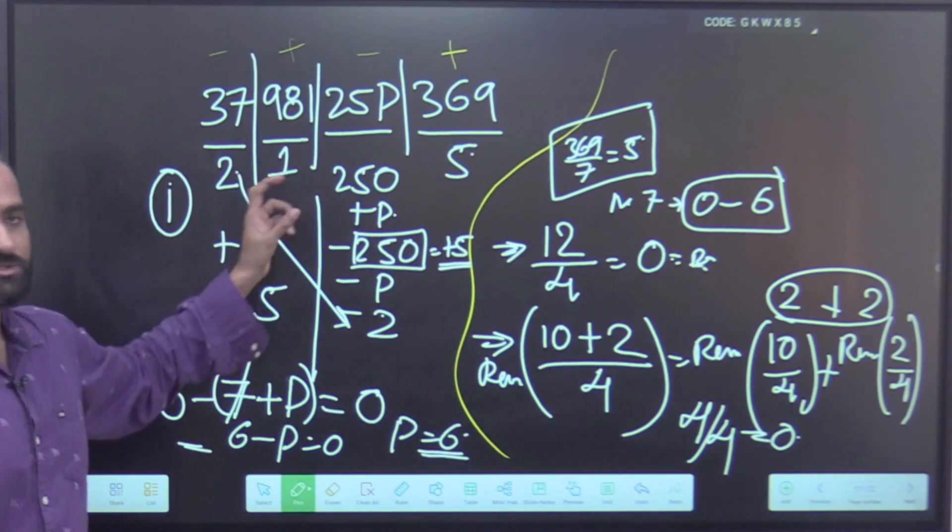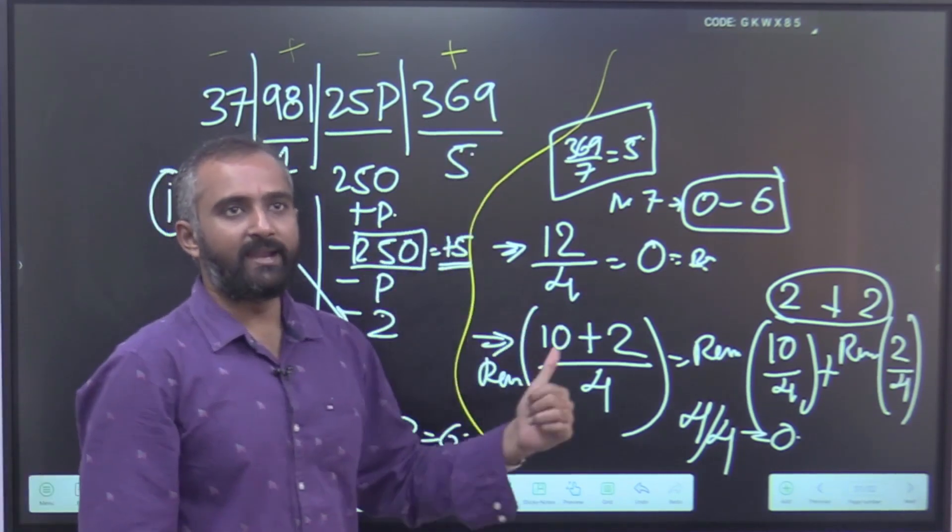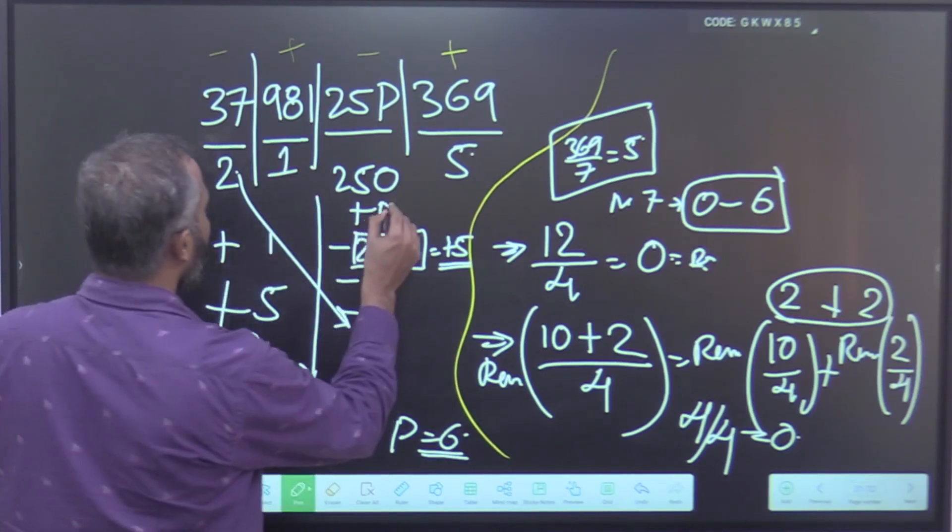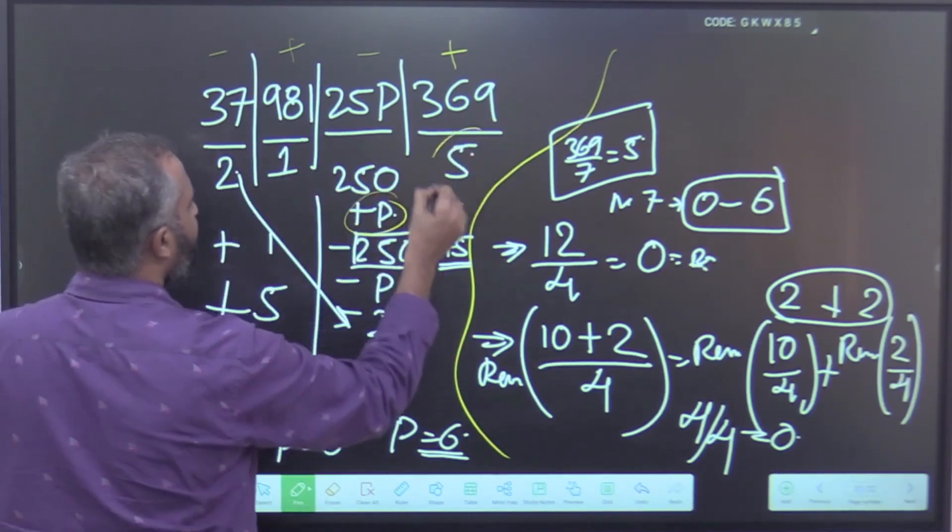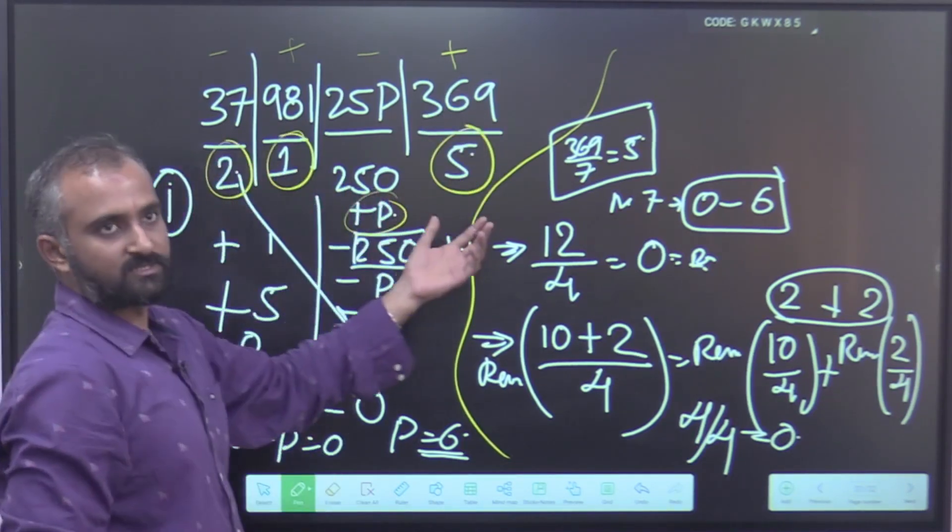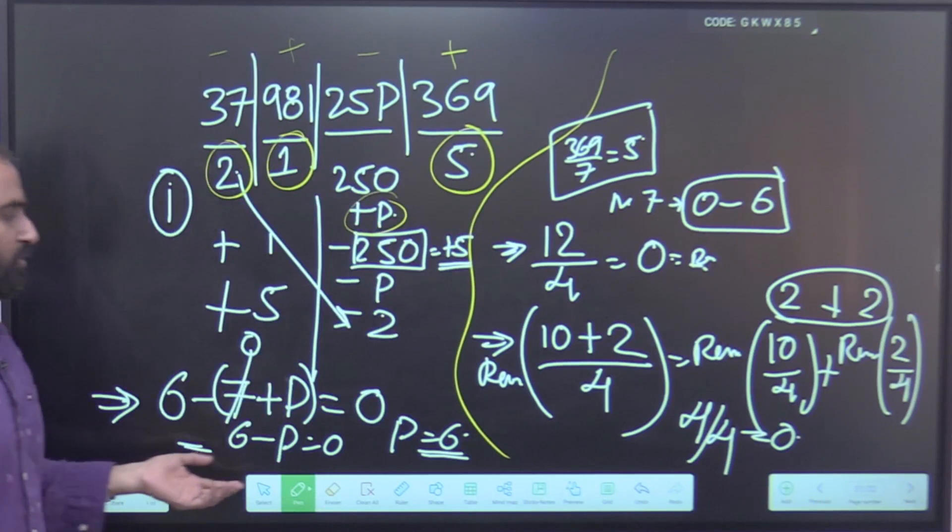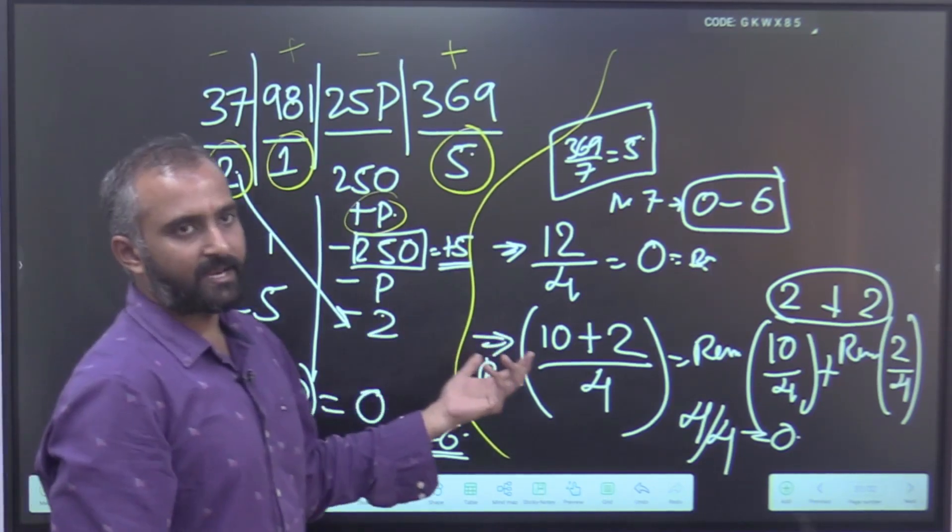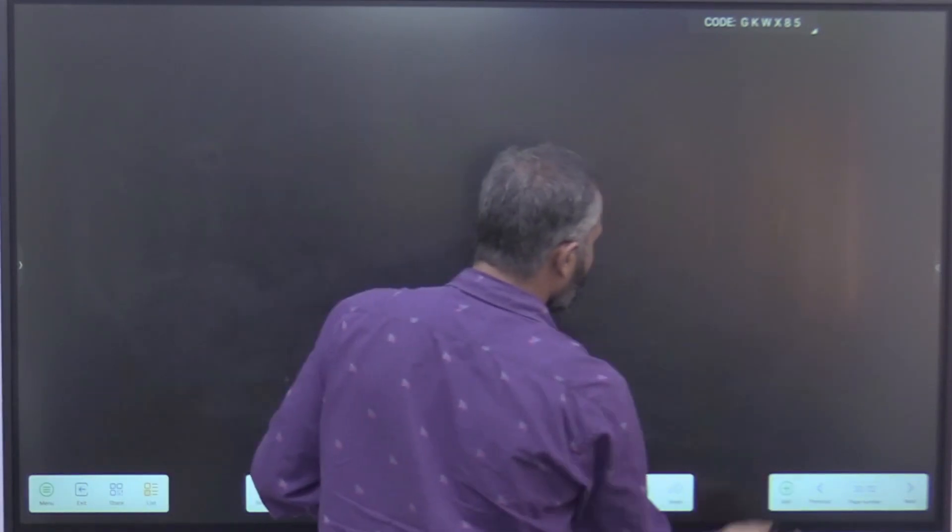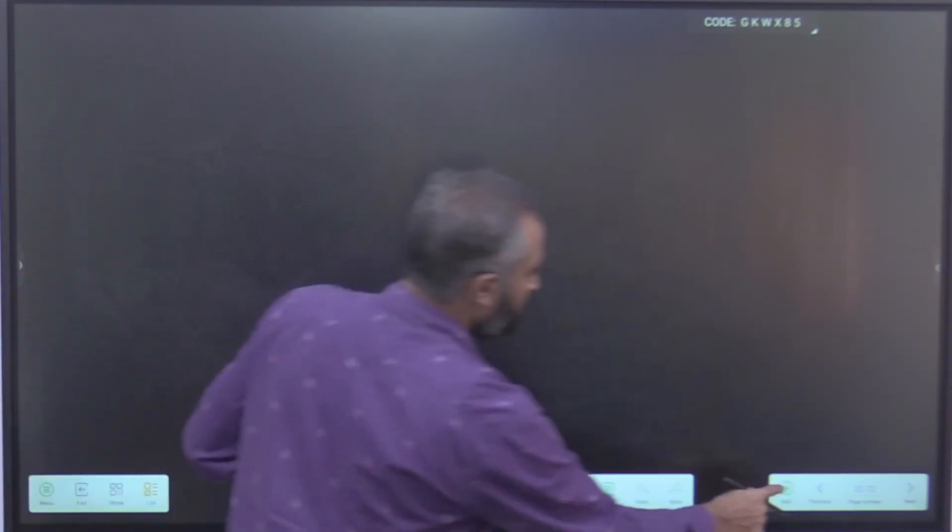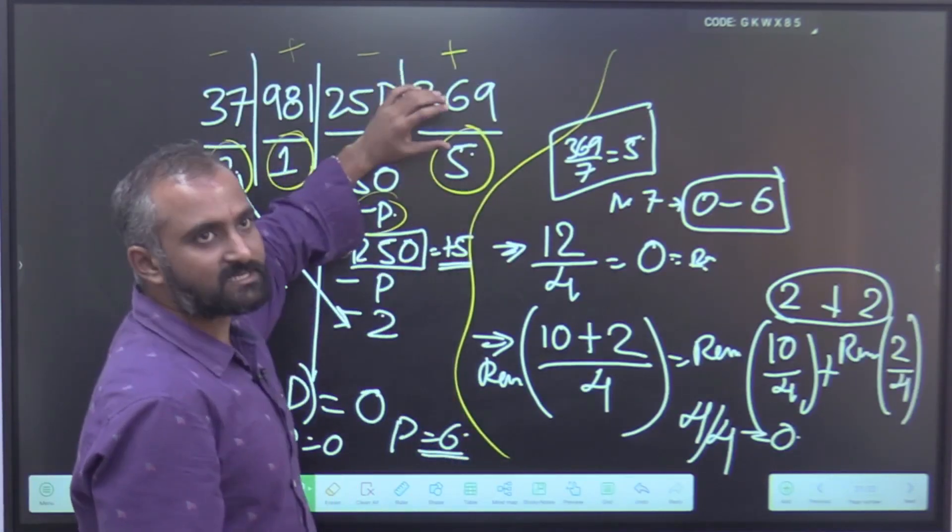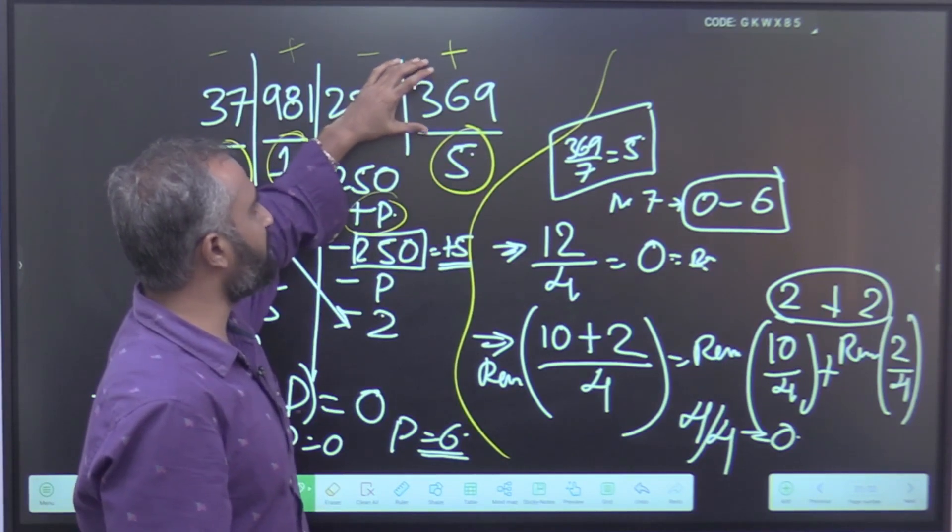You see, even after knowing the divisibility rule, the problem is complex enough. So in order to solve such problems, especially in reminders and divisibility, always, always take the help of reminders. Because we have reduced the whole number to 1s, 2s and 5s, it is easily doable and you can solve this problem in less than a minute.